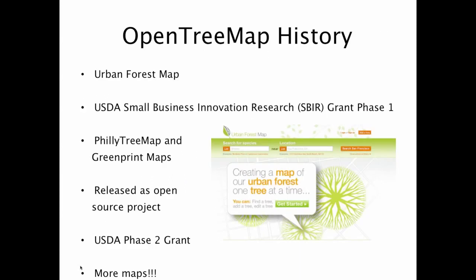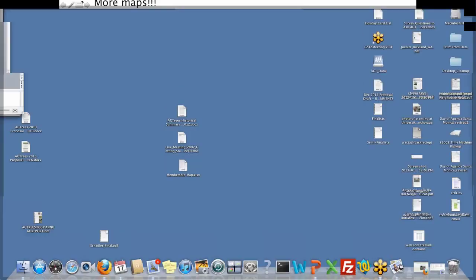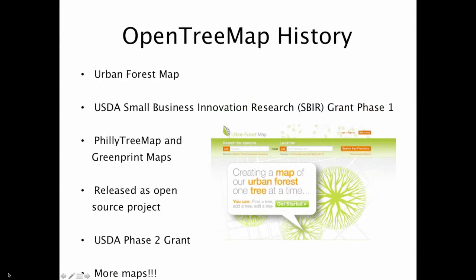So how did we get involved in OpenTreeMap? We had applied for a Small Business Innovation Research Grant from USDA, with the purpose of bringing web-based technology to the idea of crowdsourcing the urban forest. After we received the grant, we heard about an initiative in California called the Urban Forest Map in San Francisco, which accomplished a lot of the objectives we were aiming for. So rather than starting from scratch, we combined forces with that initiative and built even more than we expected in our first phase. That first phase resulted in Philly Tree Map and Green Print Maps in Sacramento. We eventually released the code as open source and received a second phase of USDA funding, leading to even more cities adopting the Tree Map software.